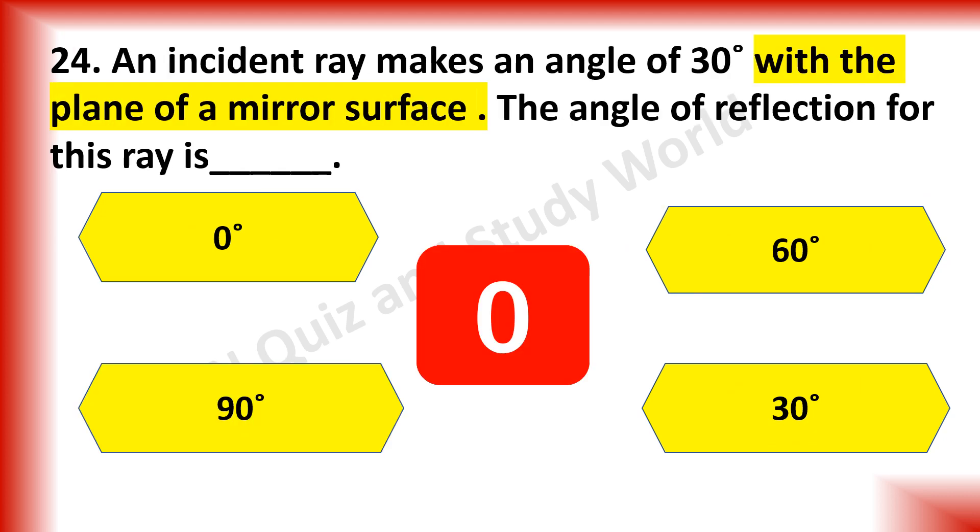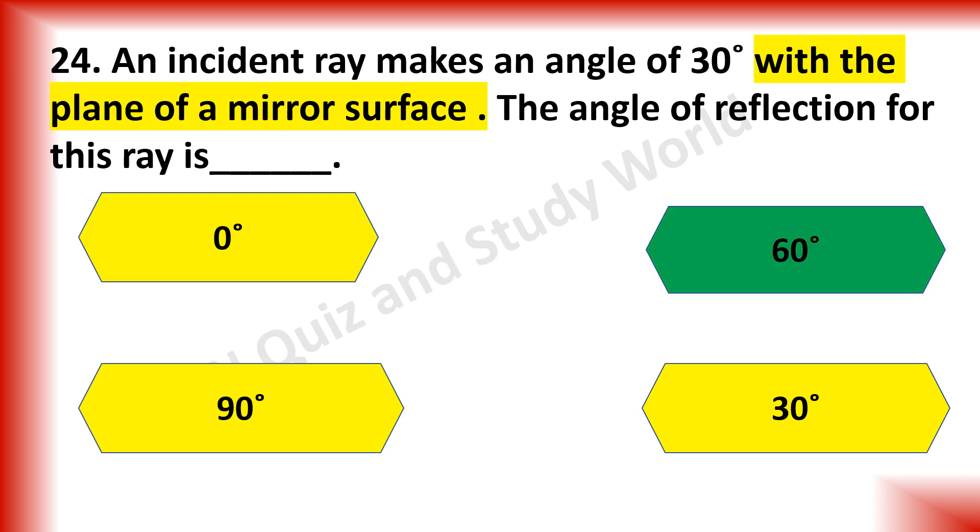An instant ray makes an angle of 30 degree with a plane of a mirror surface. The angle of reflection for this ray is dash. Is it 0 degree, 60 degree, 90 degree or 30 degree angle? The answer is 60 degree angle.